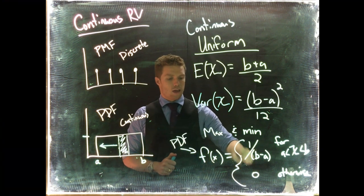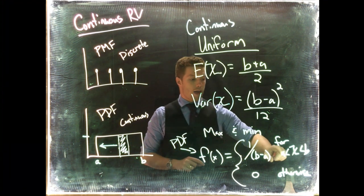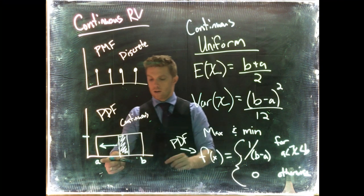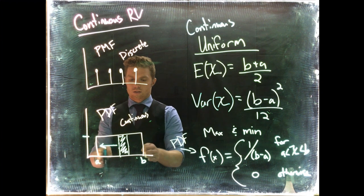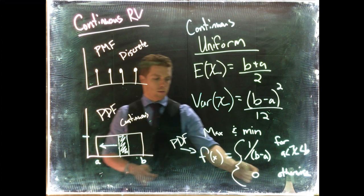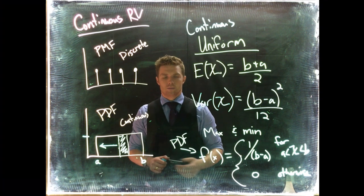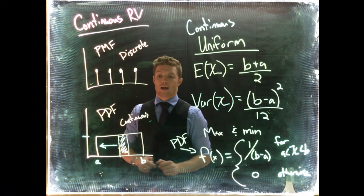So our PDF, our probability density function, actually extends from negative infinity to positive infinity, and we're just saying that we only have an associated PDF for our random variable being greater than A and less than B. We only have area over this range. Everything else, the probability of the event happening is